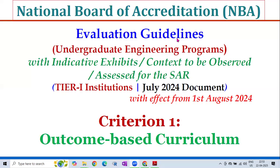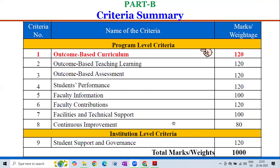Welcome to the National Board of Accreditation Evaluation Guidelines for Undergraduate Engineering Programs with Indicative Exhibits or Context to be Observed or Assessed for the Self-Assessment Report under Tier 1 Institutions from the July 2024 document. Here we will see Criterion 1, that is Outcome-Based Curriculum Evaluation Guidelines.